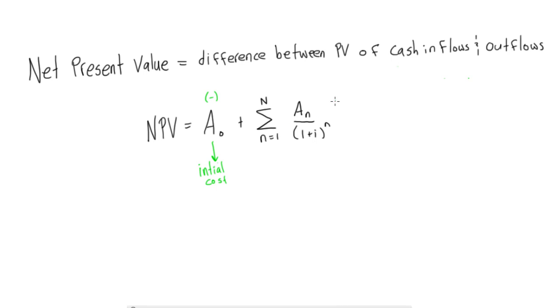Now this term over here is going to deal with the annual stuff that we have going on with the project. So this AN is going to be your annual net cash flow. So I'll just write this down for us so you have it, annual net cash flow.